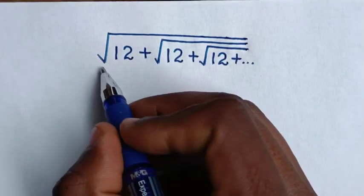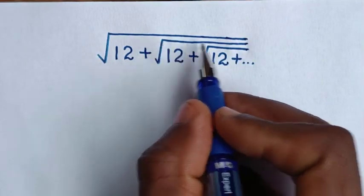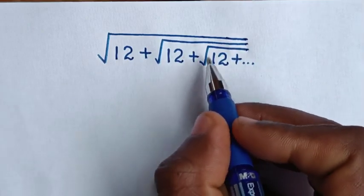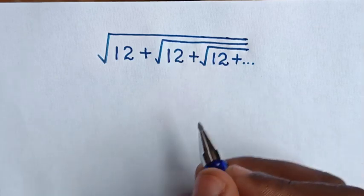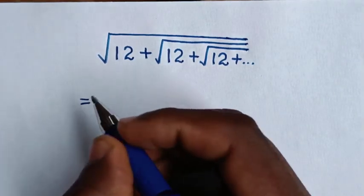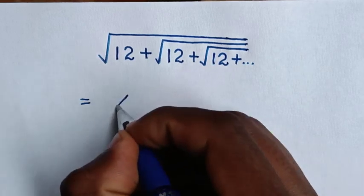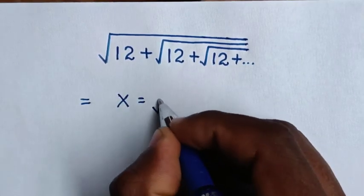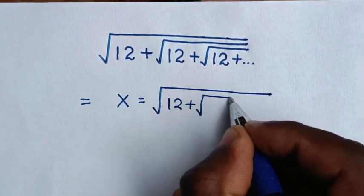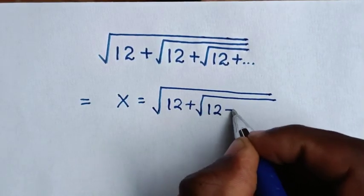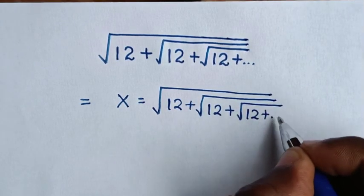Hello. How to solve square root of 12 plus square root of 12 plus square root of 12, plus up to infinity. This radical will be equal to — we let this radical as x, then x is equal to square root of 12 plus square root of 12 plus square root of 12 plus up to infinity.